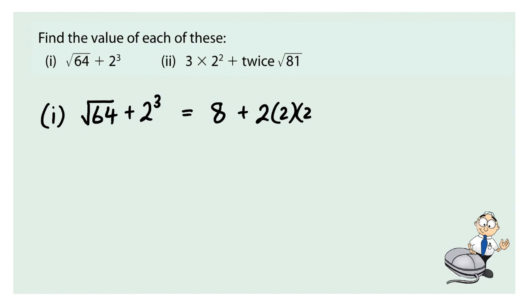2 cubed means 2 multiplied by itself 3 times. So this is 8 plus 2 fours. 2 fours are 8, so this is 8 plus 8, which gives us 16.